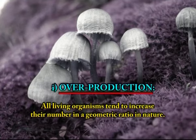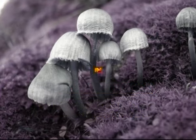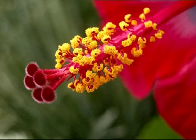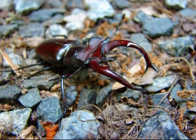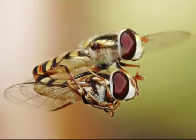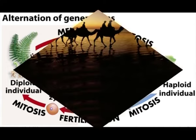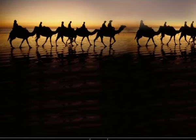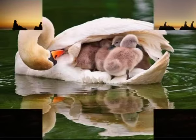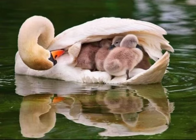The first factor is overproduction. All living organisms tend to increase their number in a geometric ratio in nature. Potentially, each organism is capable of reproducing at a very high rate. Thus, any given population is usually able to reproduce many more young individuals than can adequately be raised in the region it occupies.